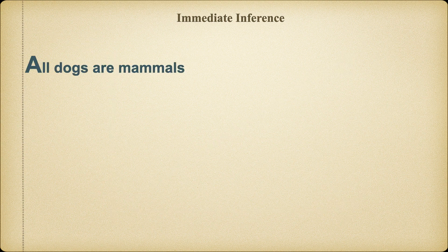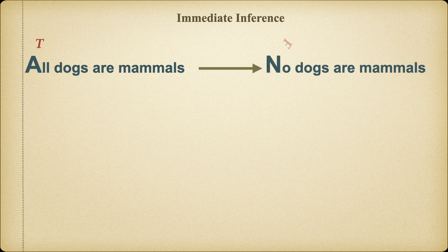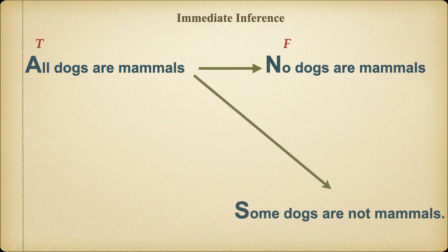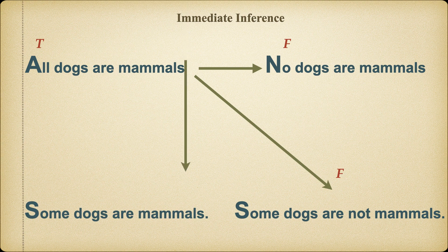Now let's think about some actual categorical propositions, and we'll see exactly the same thing. If we assume that "all dogs are mammals" is true, then we can immediately infer that "no dogs are mammals" must be false. Similarly, "some dogs are not mammals" must be false, and of course "some dogs are mammals" would have to be true.